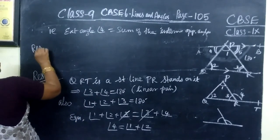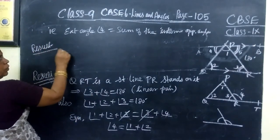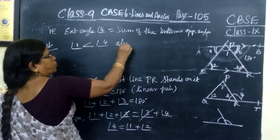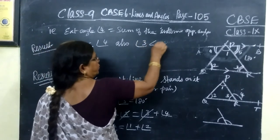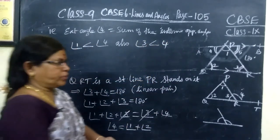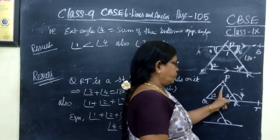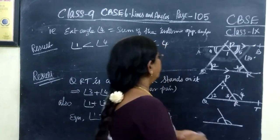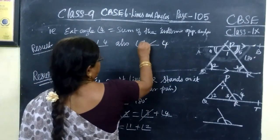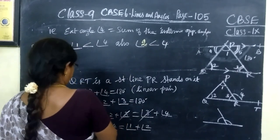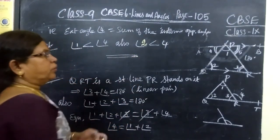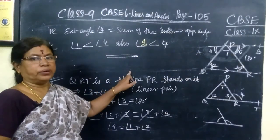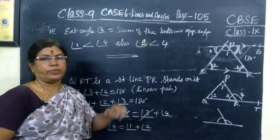Result 3: angle 1 is always less than angle 4, and angle 2 is always less than angle 4. This is obvious because angle 1 plus angle 2 gives angle 4, which means each of angle 1 and angle 2 is less than angle 4. This result we have learnt in this video. We will see examples 7 and 8 in the next video.